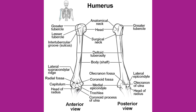Superior to the trochlea is the coronoid fossa, which receives the coronoid process of the ulna. Above the capitulum is the radial fossa, which receives the head of the radius when the elbow is flexed. Similarly, the posterior humerus has the olecranon fossa, a larger depression that receives the olecranon process of the ulna when the forearm is fully extended.